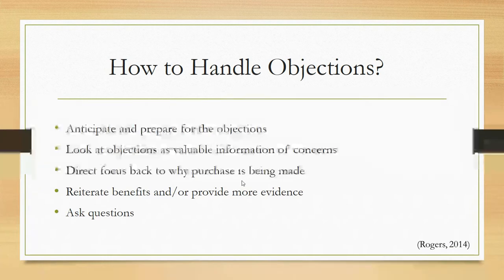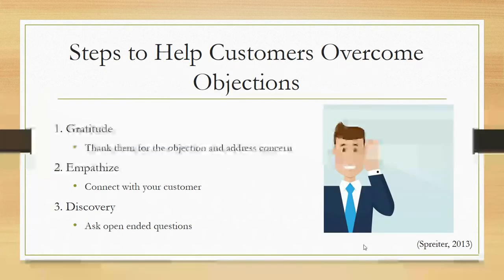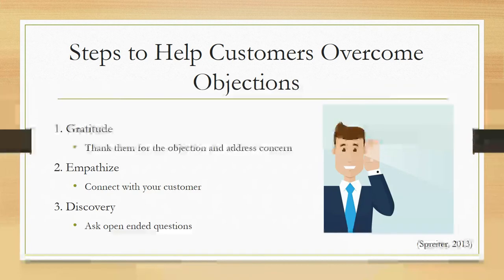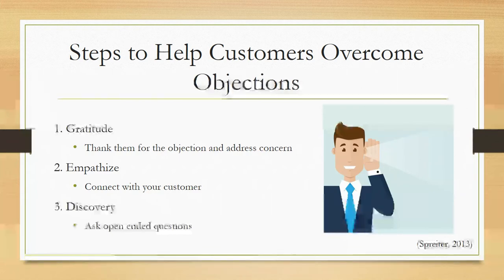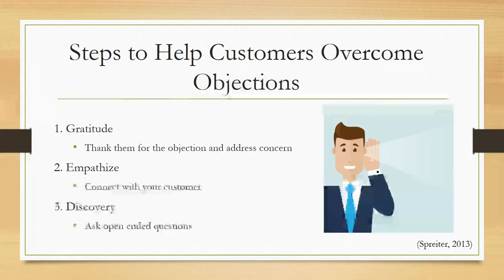There are six steps to help a customer overcome objections. When a customer first objects, you actually want to thank them for objecting, because that way they're giving you a reason. If they just flat out say no, you won't know why. If they're giving you a reason, there's something to be thankful for because you can address it. Next, you want to empathize with the customer.